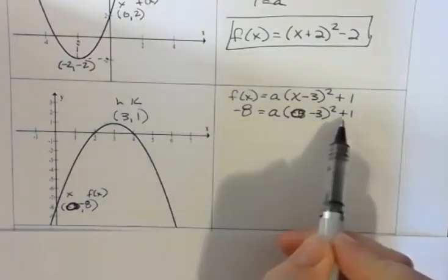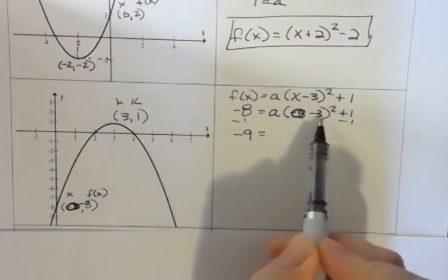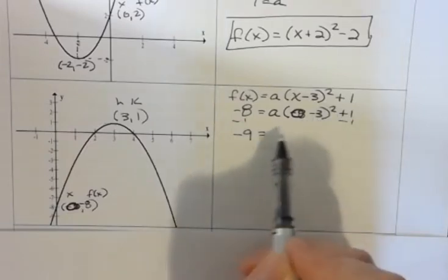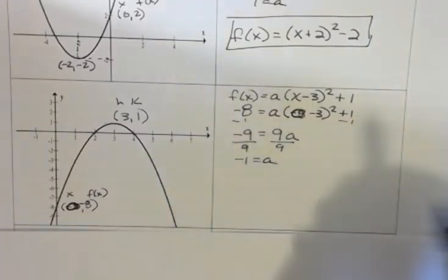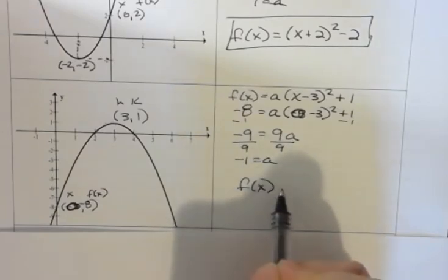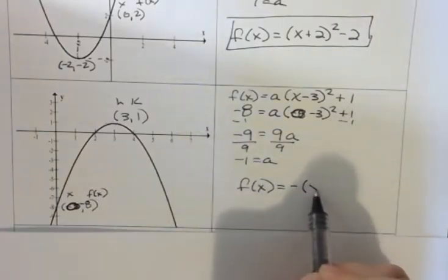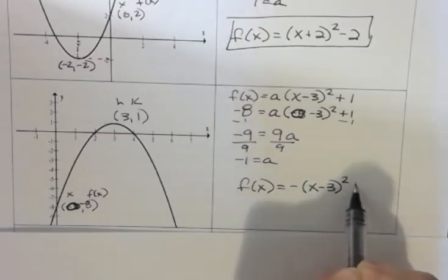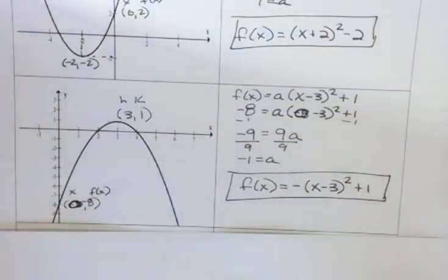So now I'm going to subtract 1 from both sides, and that's going to give me negative 9. And I have negative 3, 0 minus 3 is negative 3 squared, which is positive 9. And if I divide both sides by 9, I get a equals negative 1. So now I can go back and finish my equation. a is negative 1, but I'm just going to put negative there. And then I have x minus 3 squared plus 1.